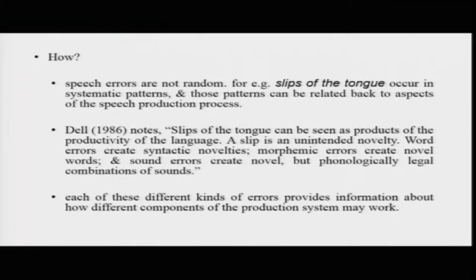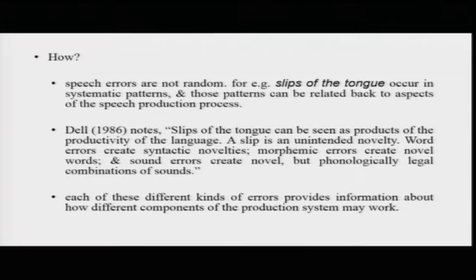Dell notes that slips of the tongue can be seen as products of the productivity of language — we create new things all the time. A slip is an unintended novelty: you wanted to say something else, but you said this. Word errors might create syntactic novelties, morphemic errors create novel words, and sound errors create novel but phonologically legal combinations of sounds. Each of these different kinds of errors will provide information about how the different components of the speech production process are really working.